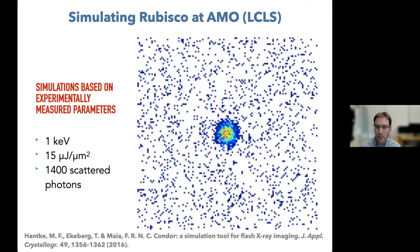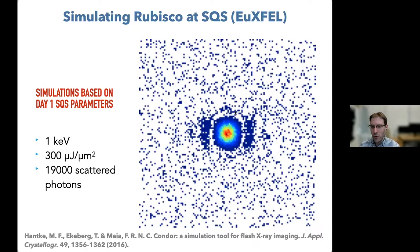When simulating diffraction patterns with these parameters, what we expected from a single Rubisco at AMO was basically only a central speckle — very hard to distinguish from beamline background. However, using estimated parameters from the SQS beamline at European XFEL — about 300 microjoules per square micron at 1 keV — we expected to see fringes from Rubisco and positively identify a hit.